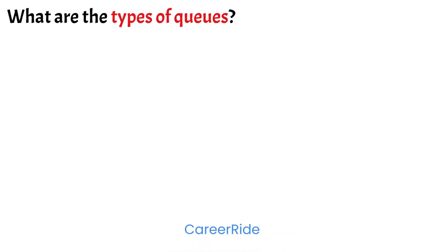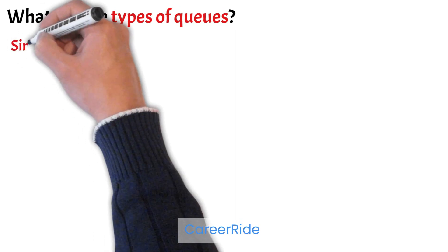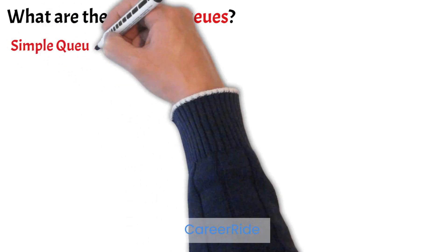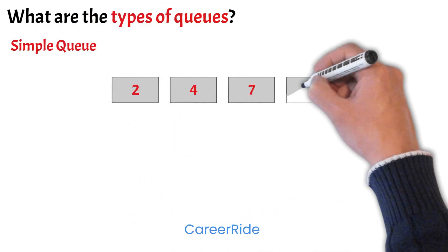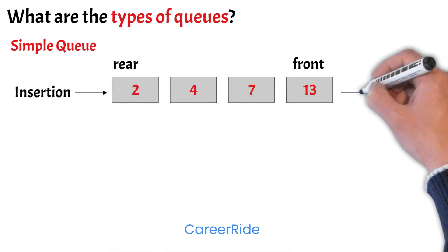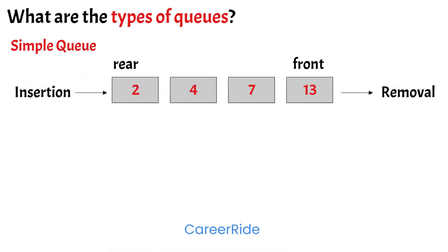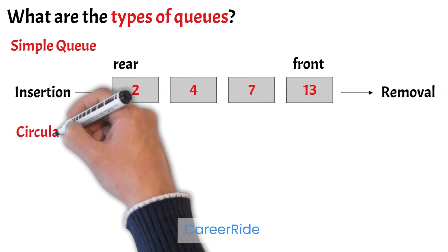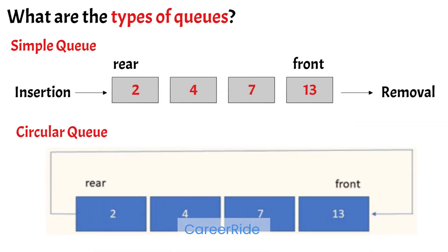The next question is: what are the types of a queue? There are four types. The first is a simple queue, where insertion is done at the rear and removal is done at the front, and it strictly follows FIFO order. The second is a circular queue, where the last element points to the first element, creating a circular link.